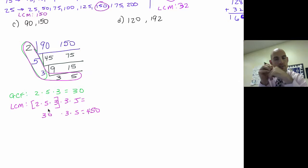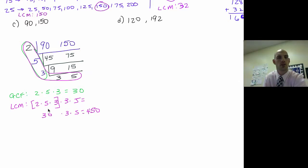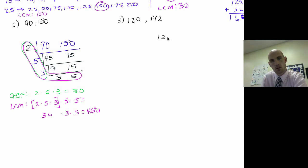You see how simple that is — all the factors are already laid out right there. That's the simple way to find greatest common factor and least common multiple. Let's look at one more example: 120 and 192.